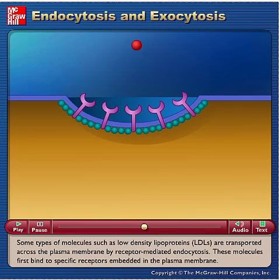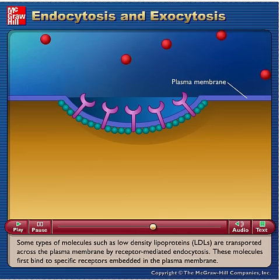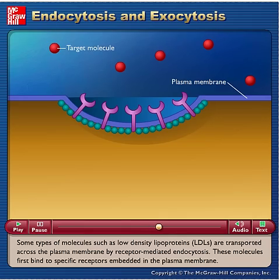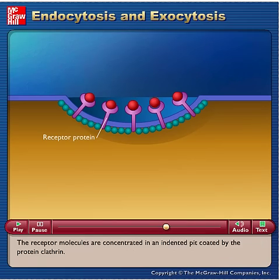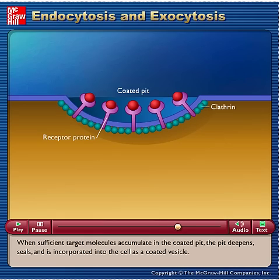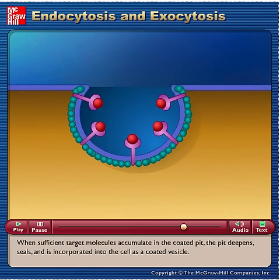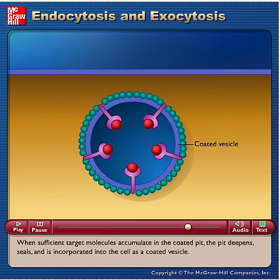Some types of molecules, such as low-density lipoproteins (LDLs), are transported across the plasma membrane by receptor-mediated endocytosis. These molecules first bind to specific receptors embedded in the plasma membrane. The receptor molecules are concentrated in an indented pit coated by the protein clathrin. When sufficient target molecules accumulate in the coated pit, the pit deepens, seals, and is incorporated into the cell as a coated vesicle.